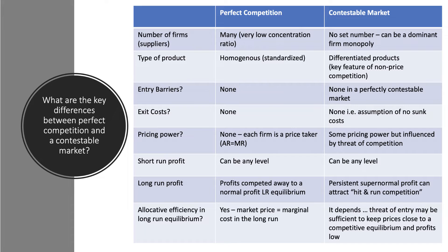In terms of the number of firms: in perfect competition there are many firms — it's a very low concentration ratio and no one firm has any significant share of the market. In a contestable market there can be any number of suppliers. It could be a one-firm industry, a dominant firm monopoly, and still be contestable. It sounds counterintuitive, but it doesn't matter how many firms there are in a contestable market, as we'll see in a minute.